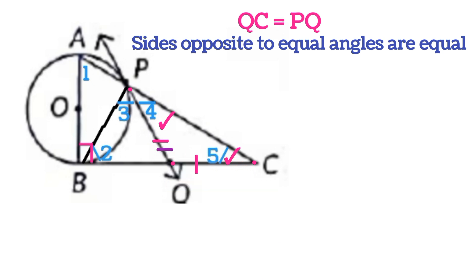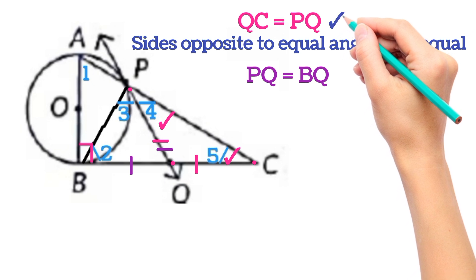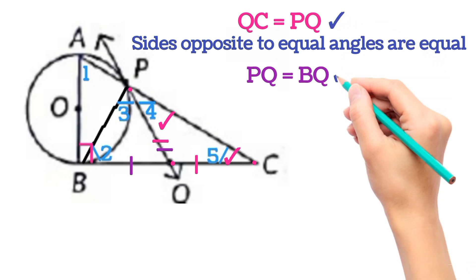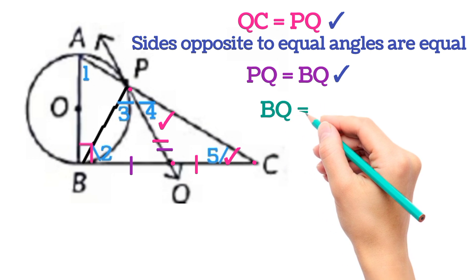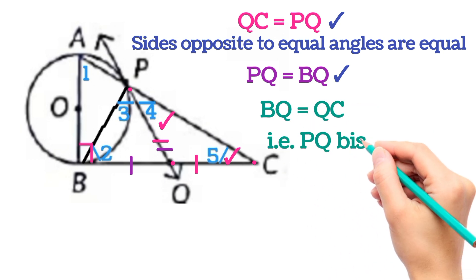Now PQ will be equal to BQ because both are the tangent from the same point Q to the same circle. So PQ is equal to BQ. Now PQ is equal to QC and PQ is equal to BQ. So on comparing both equations we will get BQ is equal to QC, that is PQ bisects BC.